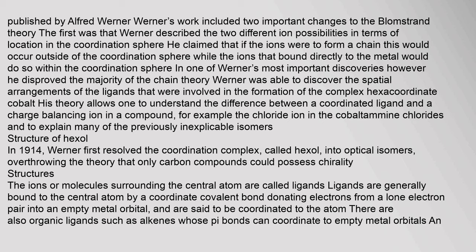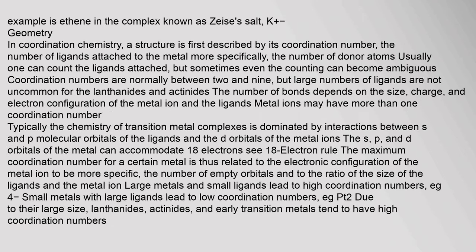In 1914, Werner first resolved the coordination complex called hexol into optical isomers, overthrowing the theory that only carbon compounds could possess chirality. The ions or molecules surrounding the central atom are called ligands. Ligands are generally bound to the central atom by a coordinate covalent bond, donating electrons from a lone electron pair into an empty metal orbital, and are said to be coordinated to the atom. There are also organic ligands such as alkenes whose pi bonds can coordinate to empty metal orbitals.